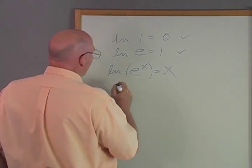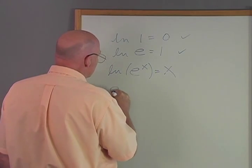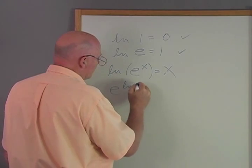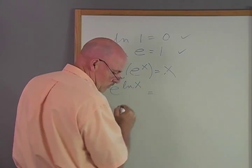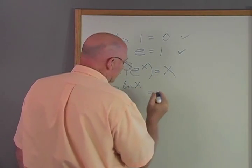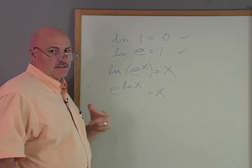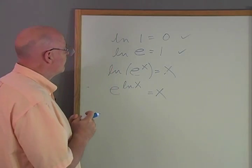So, next one's a little harder, at least it is for me to grasp. E to the natural logarithm of X equals X. This is the reverse of this. They're inverses of inverses.